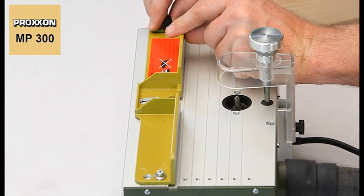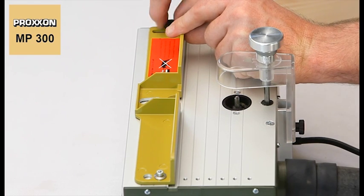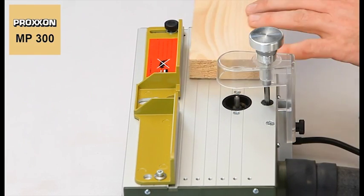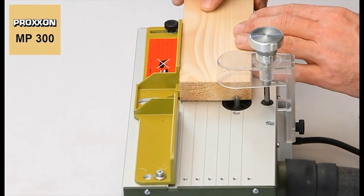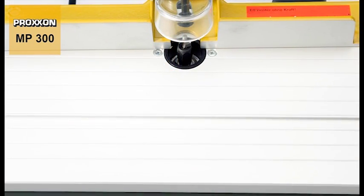The groove clearance can be set by swiveling the stop. And we're ready. For a precise feed, the table is made of very strong extruded anodized aluminum.